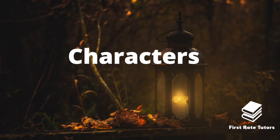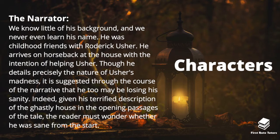When it comes to the characters, the first is the narrator himself. We know very little of his background and we never learn his name, however we do learn that he was a childhood friend of Roderick Usher and arrives at the mansion on horseback with the intention of helping Usher. Though he details precisely the nature of Usher's madness, it is suggested through the narrative that he too may be losing his sanity. Given his terrified description of the ghastly house in the opening passages, the reader must wonder whether he was sane from the start.